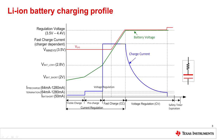Next we'll review the lithium-ion battery charging profile. Assuming we start with a battery that is completely discharged, as shown in green on the curve, the battery charger will only provide a small trickle charge or pre-charge current in order to close the battery protector. Once the battery protector closes, the battery voltage should jump up to a low value such as around 2.8 volts, and at that point the battery charger will begin fast charging. This whole time — between trickle charge, pre-charge, and fast charge — is called the current regulation phase of the battery charger.